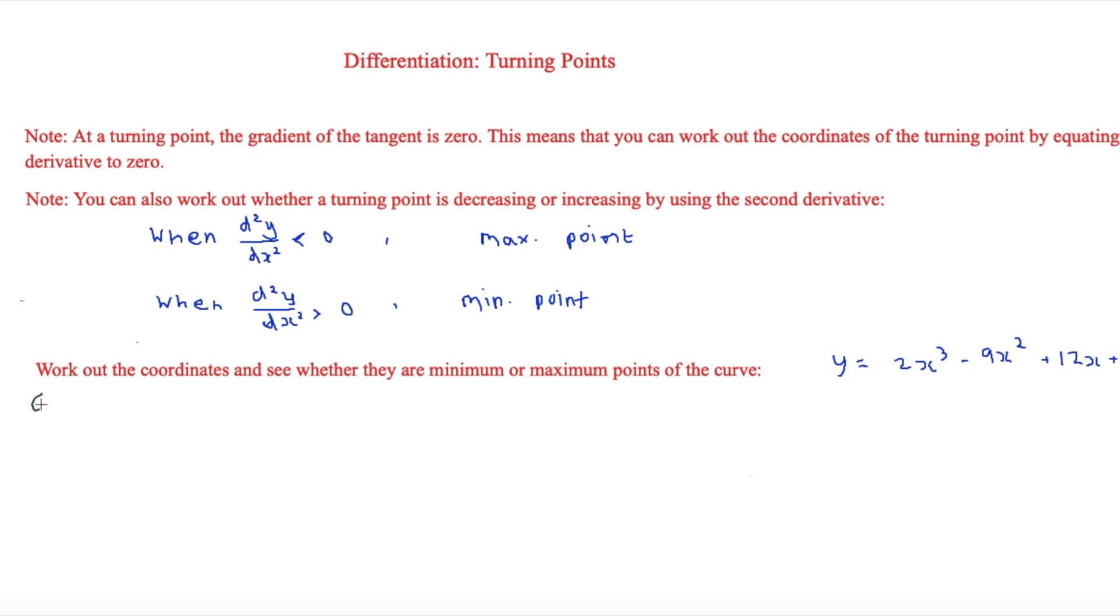So this differentiates to give 6x² - 18x + 12, and as the gradient is zero at a turning point, this is equal to zero.